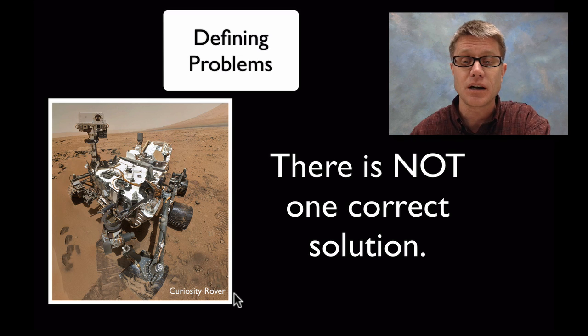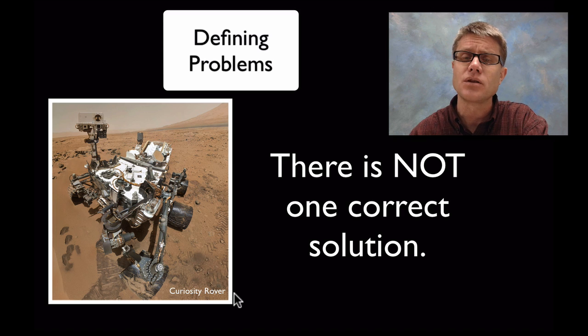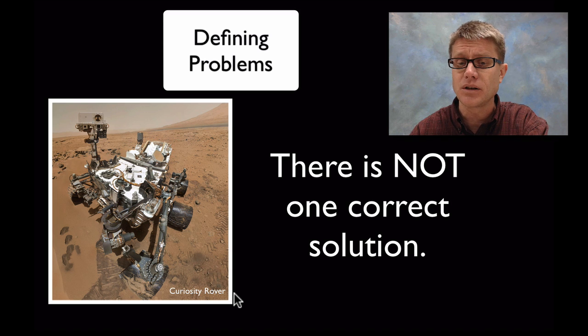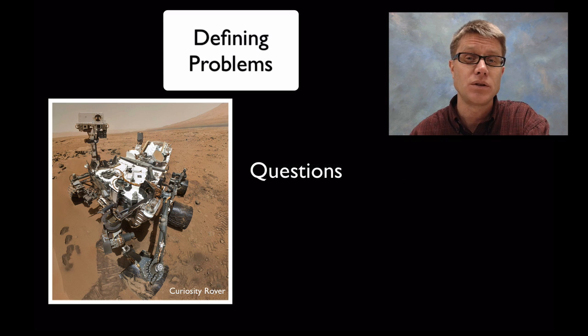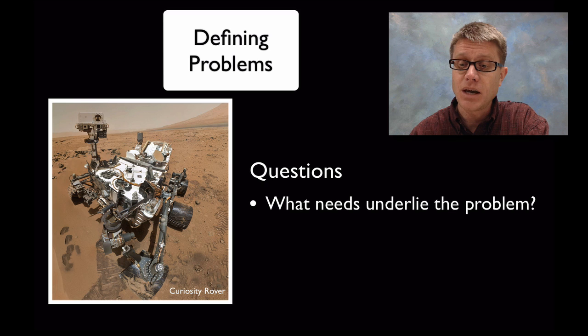Now one thing that we should point out, and this is again a difference between engineering and science, in science we're looking for this core idea that explains the way the world works. In engineering we're looking for a design that solves a problem. And so in engineering there's not always one correct solution. There's going to be a number of different solutions and we're going to have to weigh the tradeoffs with all of those solutions. And we do that through questioning.